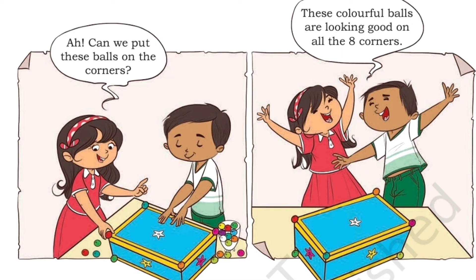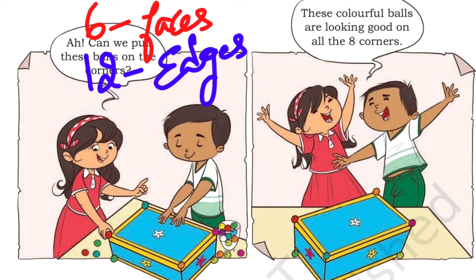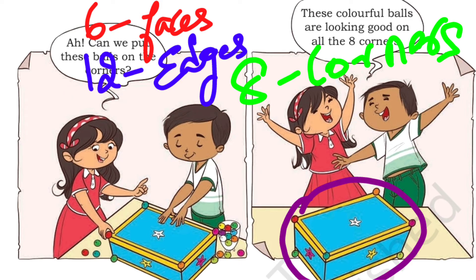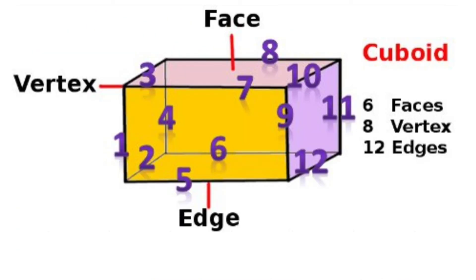Now they are going to arrange the pom-pom balls. He is asking: can we put these balls on the corners? So how many corners do we have? We have eight corners. These colorful balls are looking good on all the eight corners. So we have six faces, 12 edges and eight corners for a cuboid box. I have marked the six faces, eight vertices and 12 edges on the image of this cuboid.